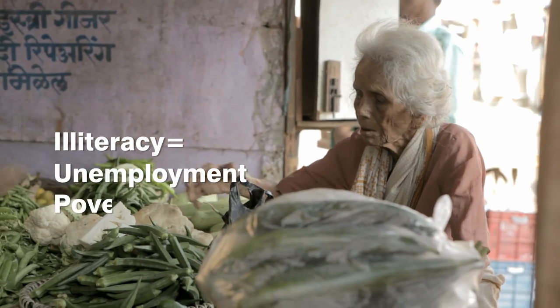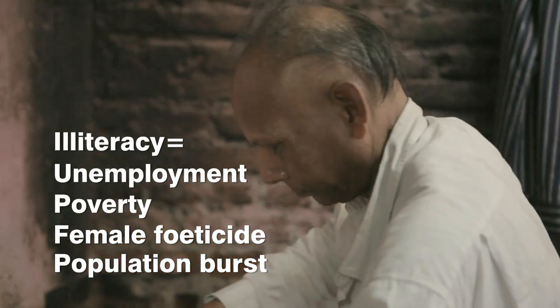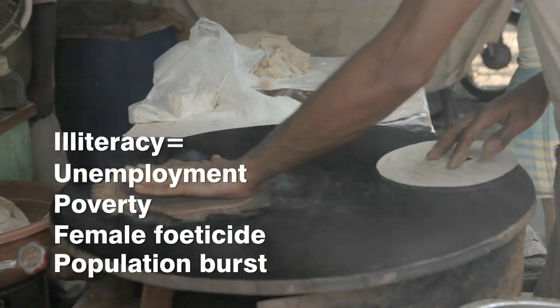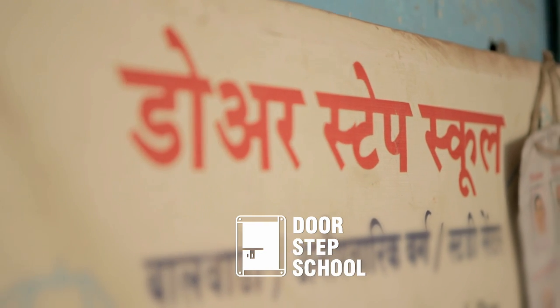Illiteracy is the mother of all problems. Doorstep School is an NGO that runs literacy programs to correct this situation.